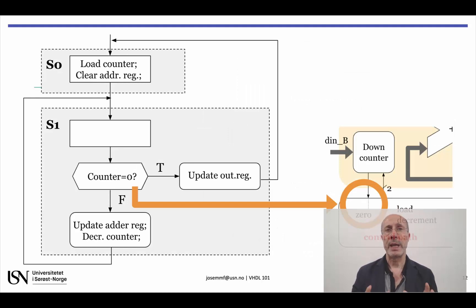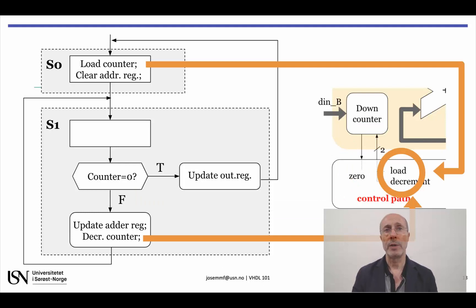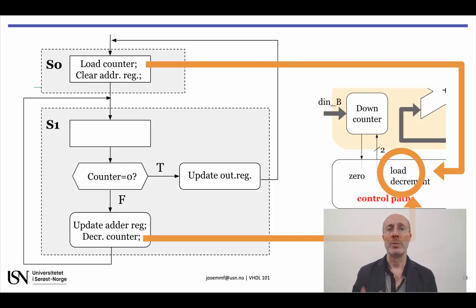Notice that there is a direct relation between each control path connection and the elements present in the ASM blocks. Each input to the control path corresponds to at least one decision box in the ASMD chart. In this case, there is only one input to the control path coming from the counter, and it corresponds to the decision box shown in state S1. Likewise, all outputs from the control path correspond to at least one state box or conditional output box in the ASMD chart. The outputs controlling the down counter operations correspond to the state box in state S0 and to the conditional output box at the bottom of state S1.